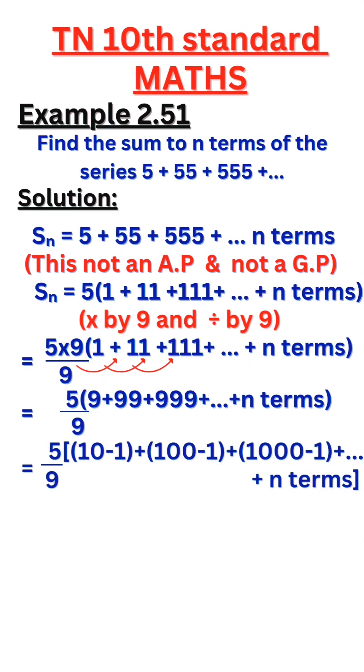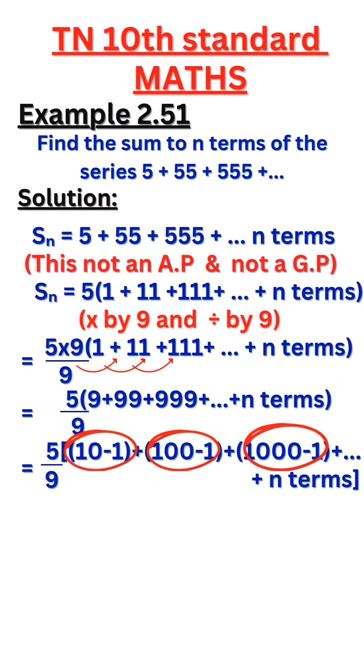So we get 5 by 9 into 10 minus 1 plus 100 minus 1 plus 1000 minus 1 plus dot dot plus n terms. We consider the bracket terms. We separate the first term to one series and second term into other series.